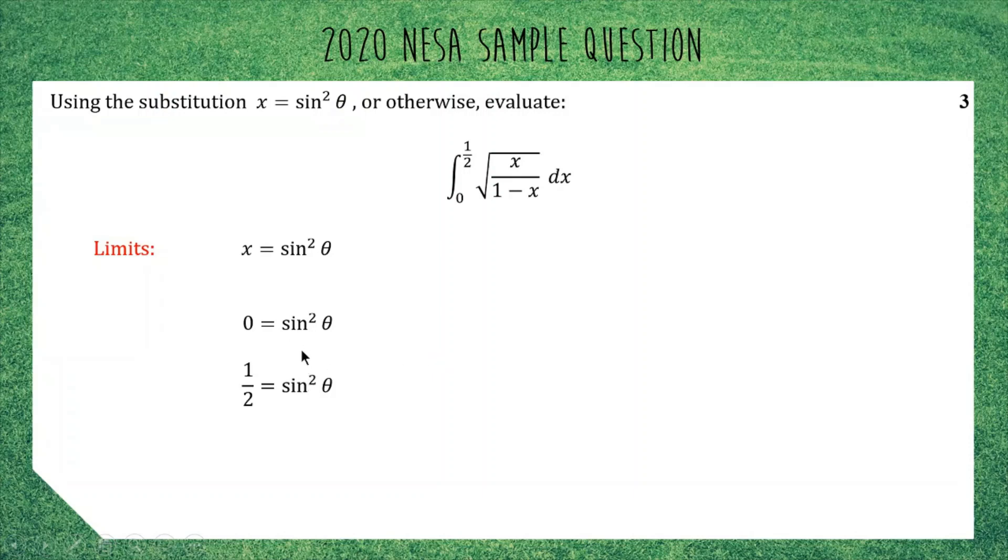Okay, so now we essentially need to solve these two equations for theta. We can take the square roots of both of them, luckily the square root of 0 is still 0, and the square root of a half is 1 over root 2. And now we're just trying to solve these equations. Obviously you know and I know and everyone knows that these have infinite solutions, we're just looking for the first one typically. So the first solution for sine equaling 0 is an angle of 0, and the first solution for sine equaling 1 on root 2, you should know is 45 degrees or pi on 4 radians. Okay, so those are our two values for theta that we're now going to use as our limits. Okay, so instead of 0 and a half, we're going to have 0 and a quarter pi. So I'll just change those.